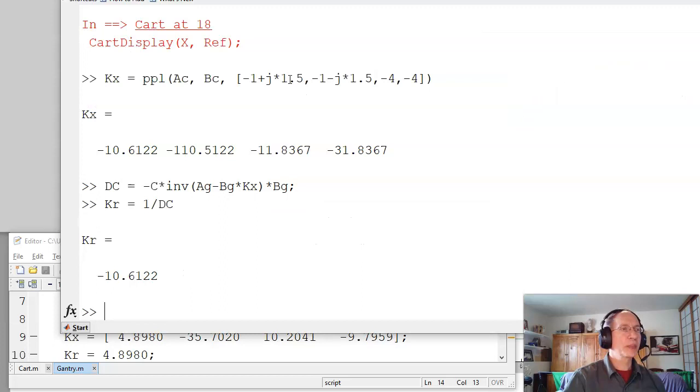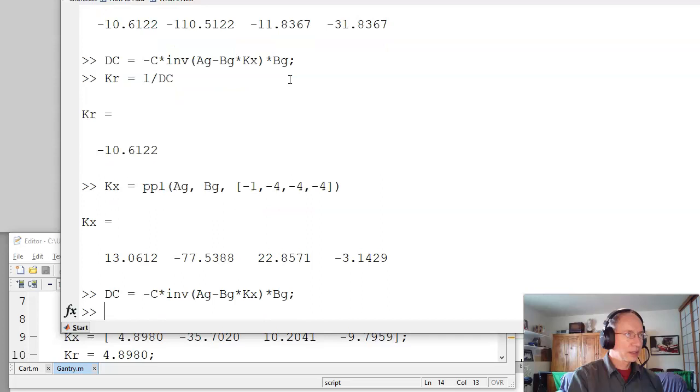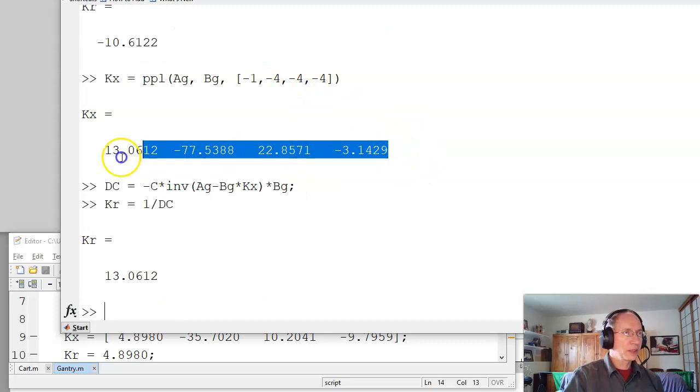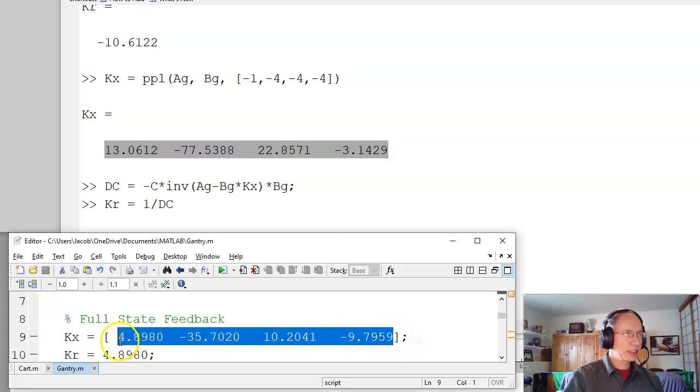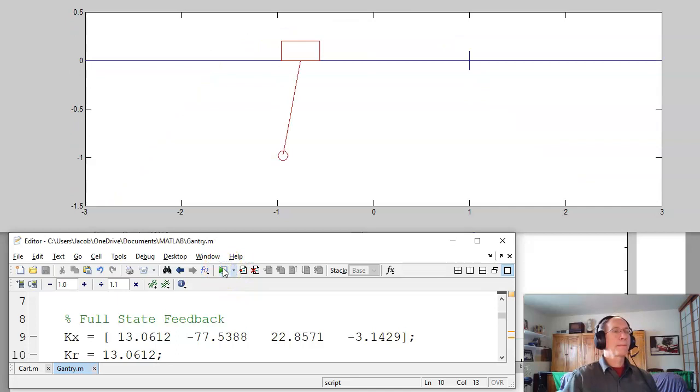Now again, the dominant pole kind of makes sense. If I take the gantry system, and put the pole somewhere else. Let's try minus 1, minus 4, minus 4, minus 4. I get a different set of gains. So here's my feedback gains. Change this, and now I have a new feedback control law. Now the poles are at minus 1, minus 4, minus 4, minus 4. And it turns out for this system, that's not always the case, just for this one happens to be the case, that the first gain is also kr. I run that simulation if you go away. And here's the step response.